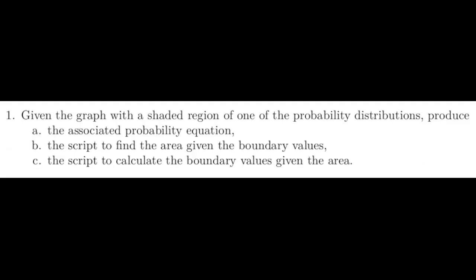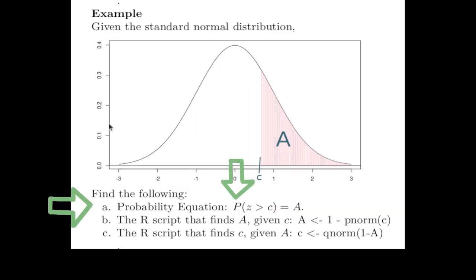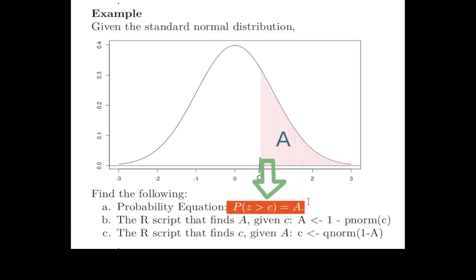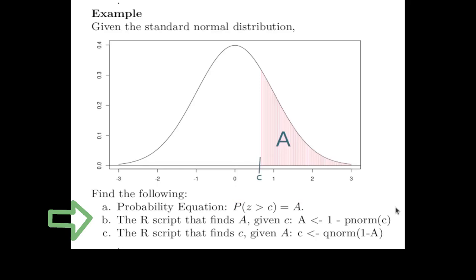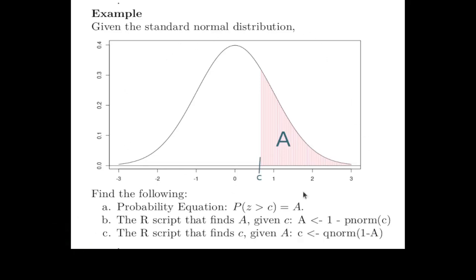In the general situation, you'll be given a graph with a shaded region in one of the probability distributions. You will be responsible for producing the associated probability equation, the script to find the area given the boundary values, and the script to calculate the boundary values given the area. For example, given a standard normal distribution with a value C and an area to the right of C: the probability equation is P(Z > C) = A; if you know C, the R code finds A; and if you know A, the R code finds C.